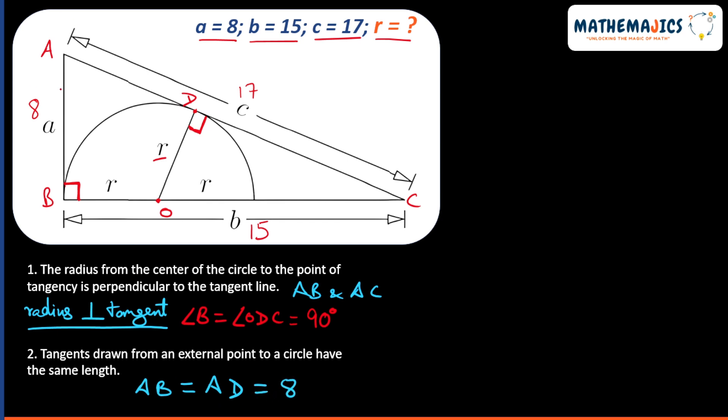So let's mark AD in the figure. AD is 8. If AD is 8, what will be DC? DC will be equal to 17 minus 8, which is equal to 9.